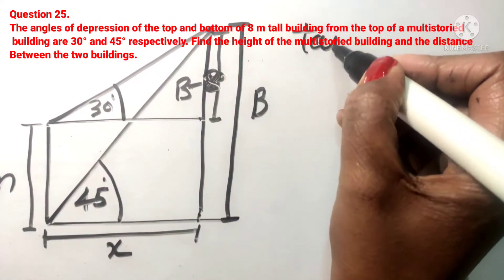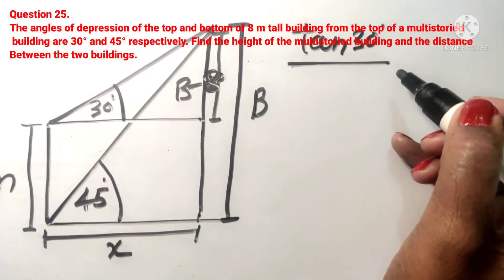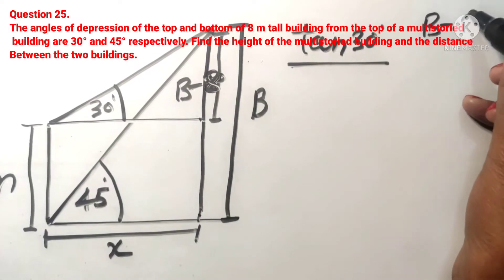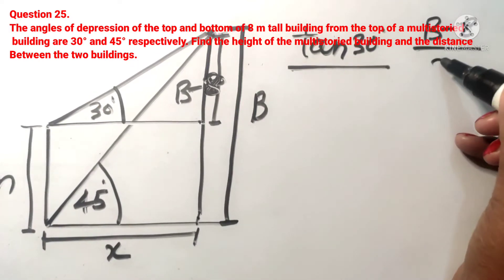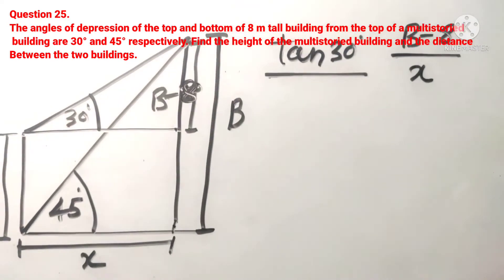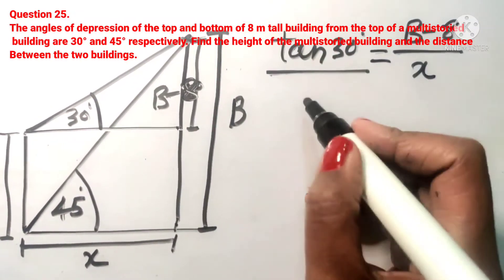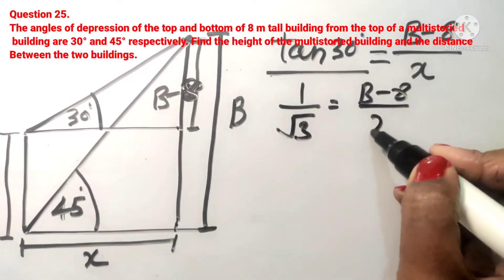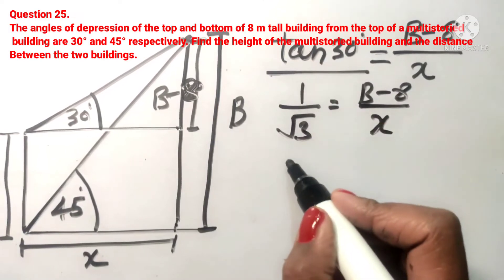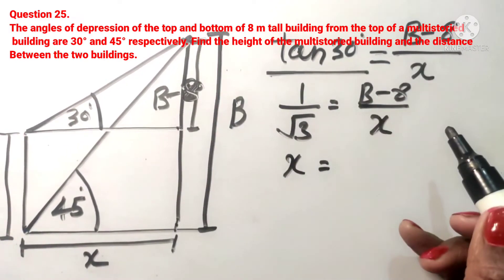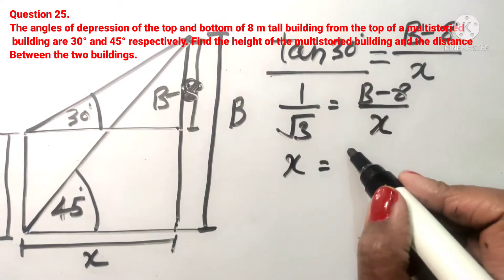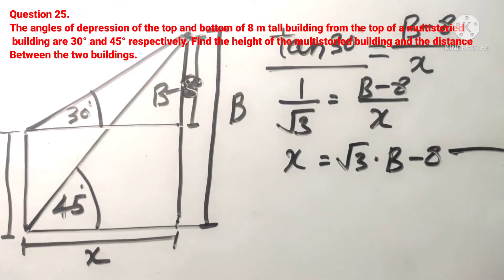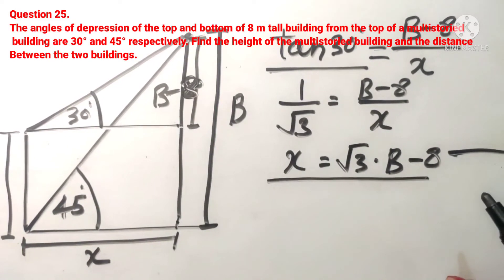Let's start with tangent 30 degrees. Tangent equals perpendicular upon base. The perpendicular is b minus 8, divided by base x. Tangent 30 degrees equals 1 upon root 3. So, 1 upon root 3 equals b minus 8 upon x. Cross multiplying, x equals root 3 times (b minus 8). This is equation number 1.